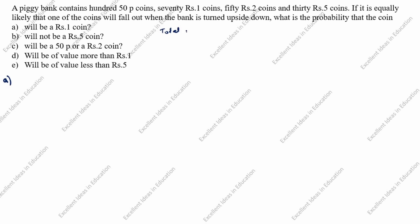So what is the total number of coins? 70 rupee 1 coins, plus 50 rupee 2 coins, plus 30 rupee 5 coins. 170 plus 30 is 200 — wait, so the total is 250 coins.